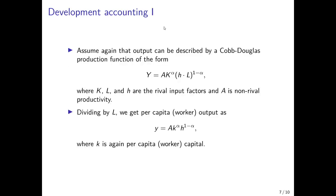Now we look at the math behind development accounting. We assume a Cobb-Douglas production function with productivity as a multiplier of the production factor — so we do not have labor-augmenting technological progress here, but productivity as a shift of the production function. Capital is physical capital with an output elasticity of alpha. Human capital is the product of individual average human capital per person multiplied by the number of workers employed in the economy, with an output elasticity of 1 minus alpha.